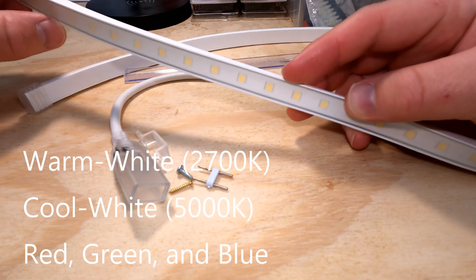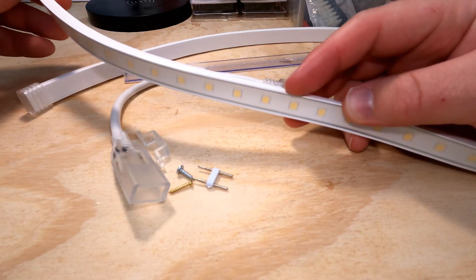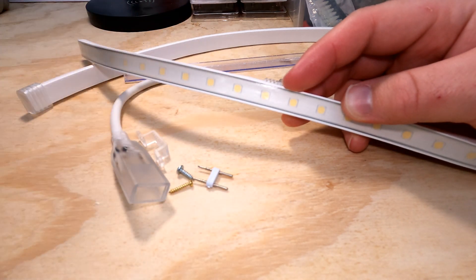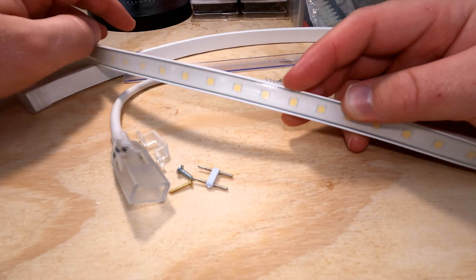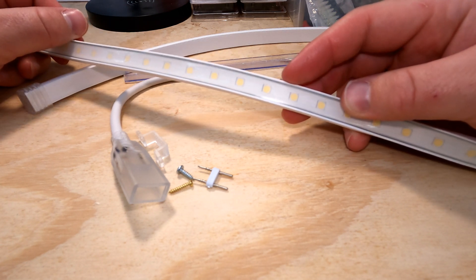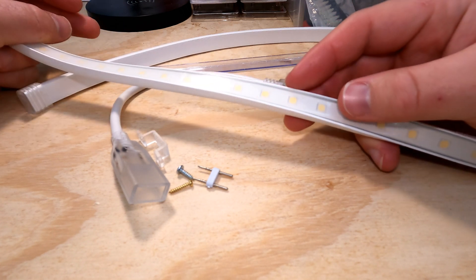Some LEDs that you can get now, the cheaper versions, they maybe have different colors. They're RGB and so they also have some blue and red in them. And so you can blend some colors together, but these are just straight 5,000 Kelvin pure white. And I think that they work pretty well.